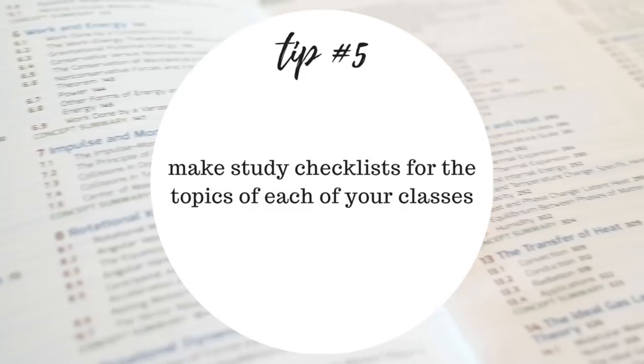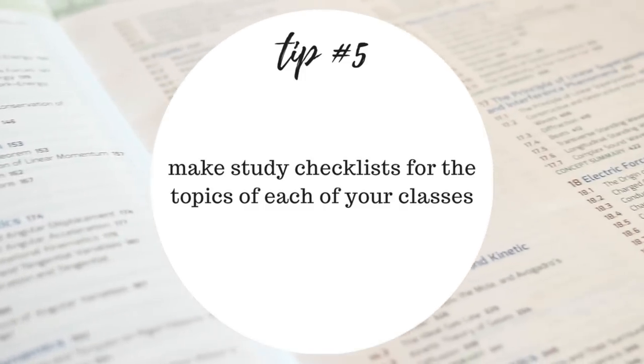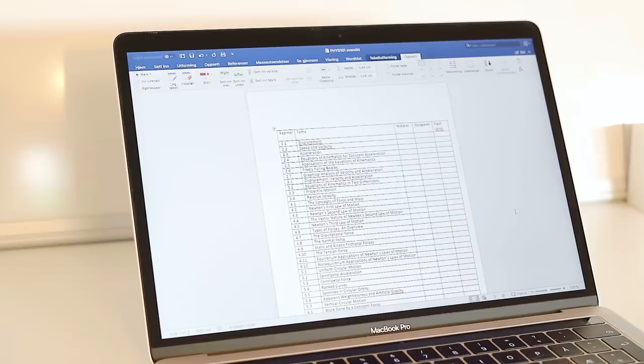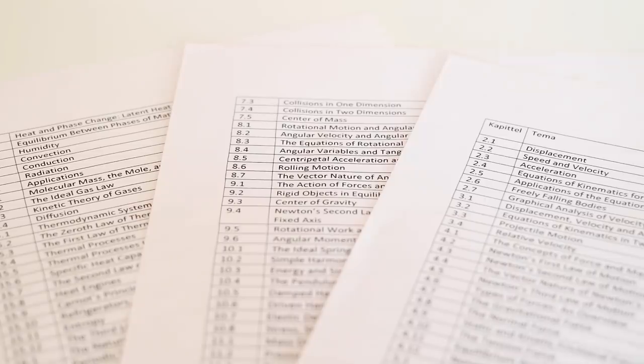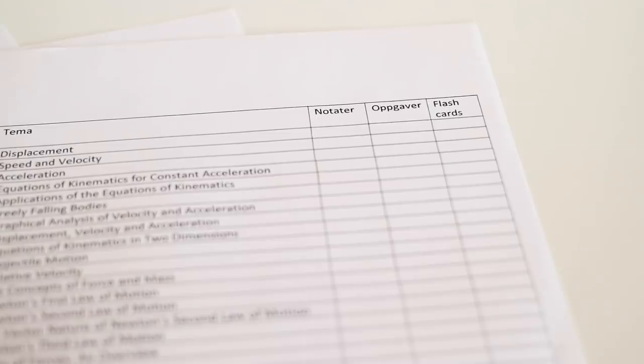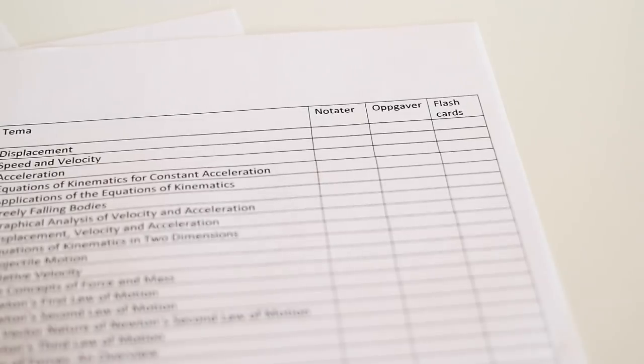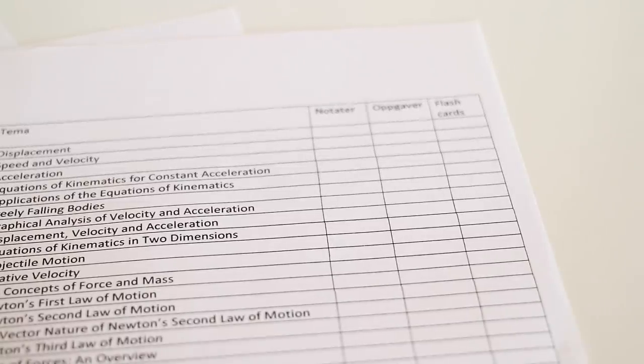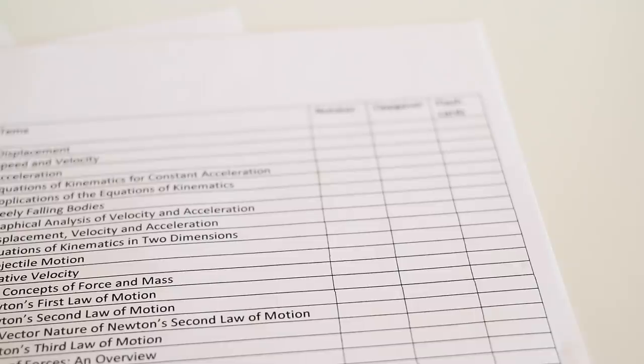Once I've gotten my textbooks and familiarized myself with them, another thing I like to do is to make a checklist for the different subchapters. This is my actual checklist for the year, which is why it's written partly in Norwegian, but I've basically written down all the topics we'll be covering, as well as three columns: one for notes, one for practice questions, and one for flashcards, and then I can mark the boxes off after I've completed one of these three things.